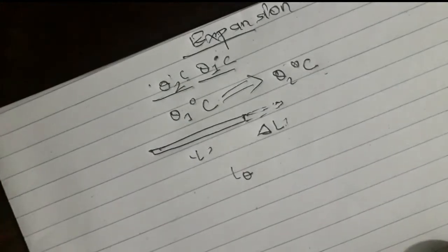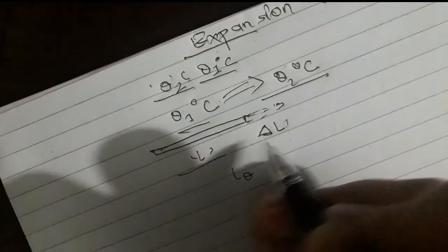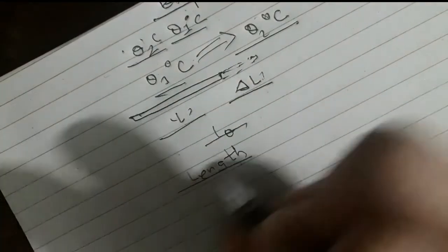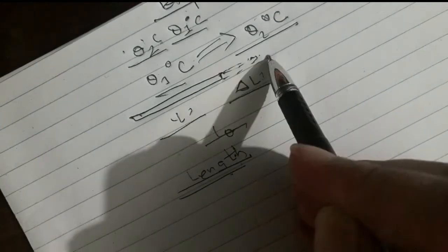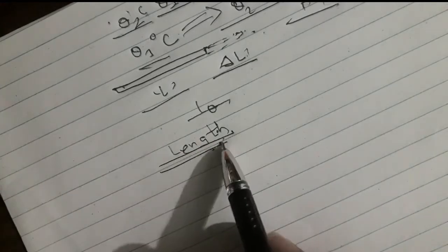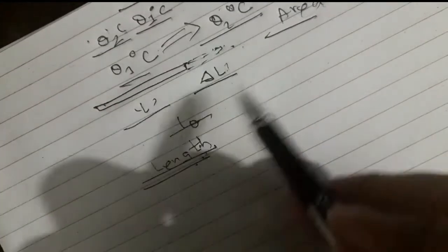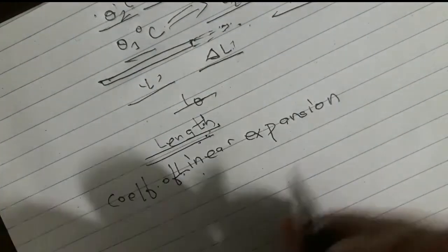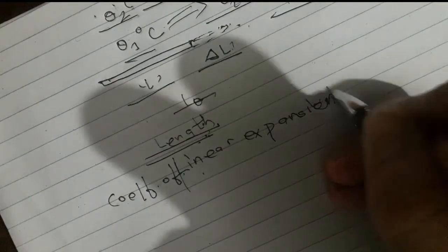When we heat a body it will expand. We have to consider three quantities: length, area, and volume. We add a coefficient for length. The coefficient is called the coefficient of linear expansion or linear expansivity.